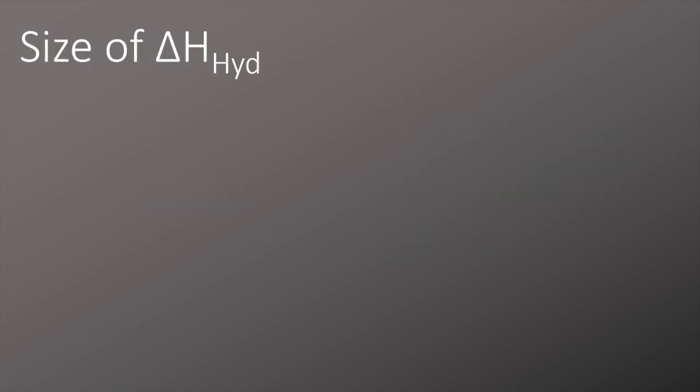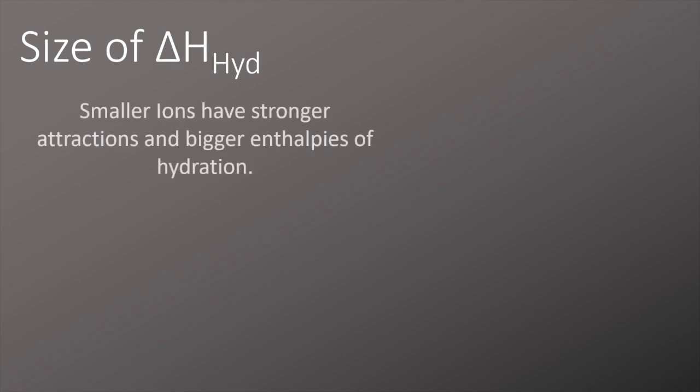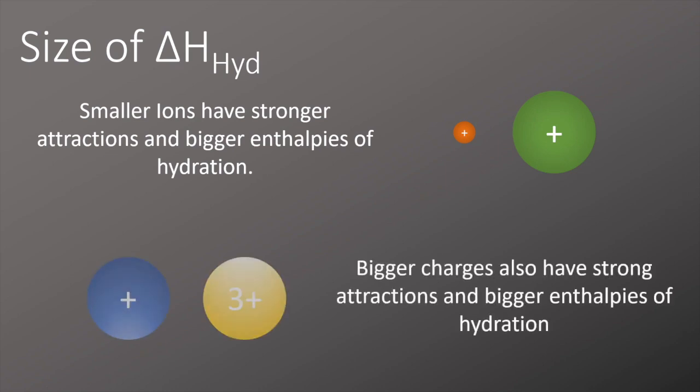The value of the enthalpy of hydration depends on two things. The first is the size of the ion — smaller ions tend to have stronger attractions and therefore larger enthalpies of hydration. Ions with bigger charges also have stronger attractions and therefore larger enthalpies of hydration as well.